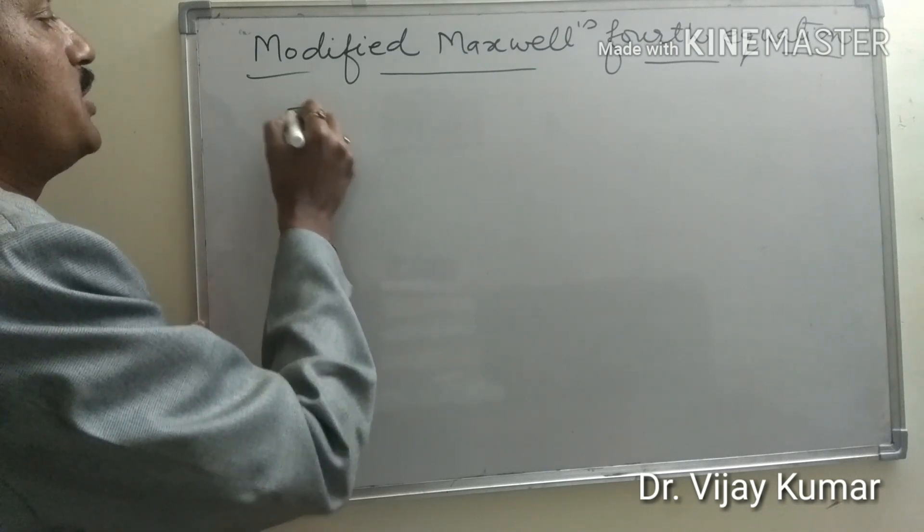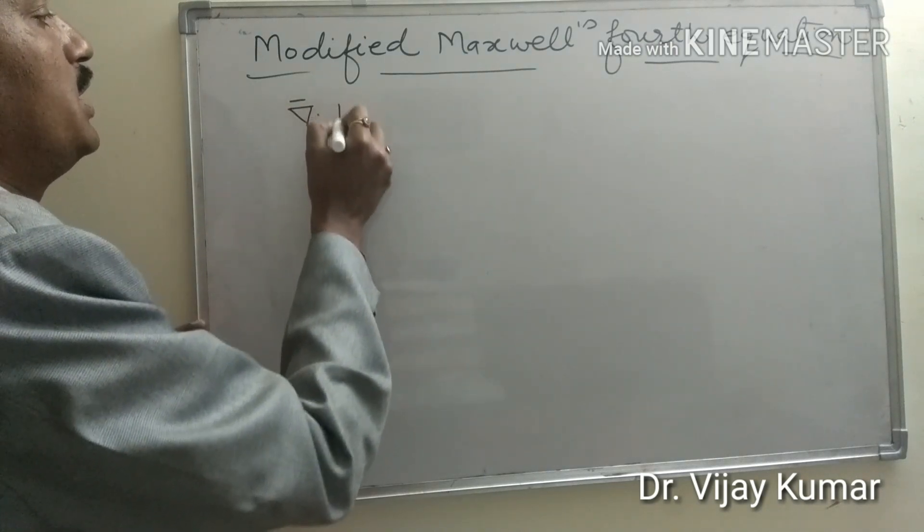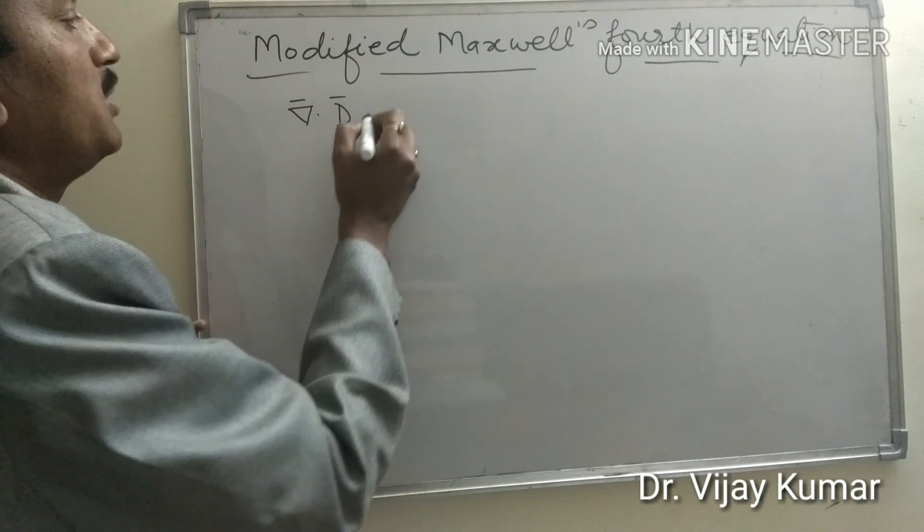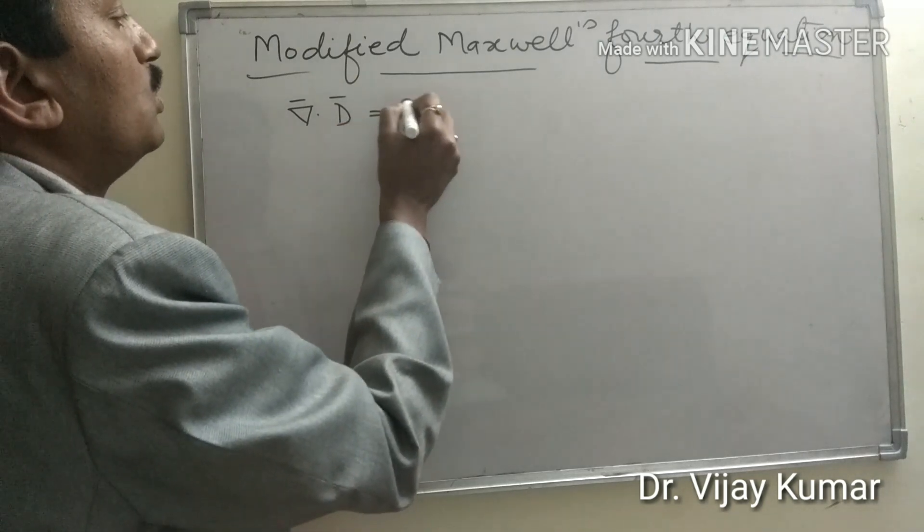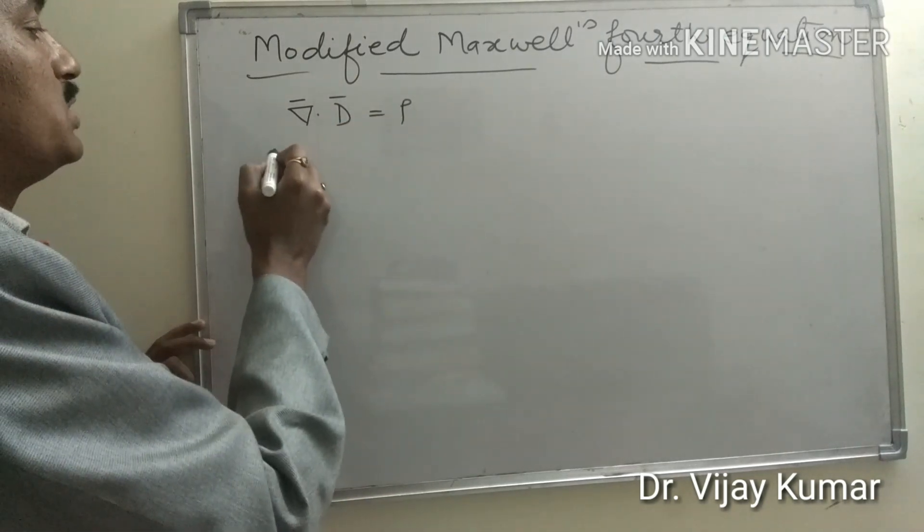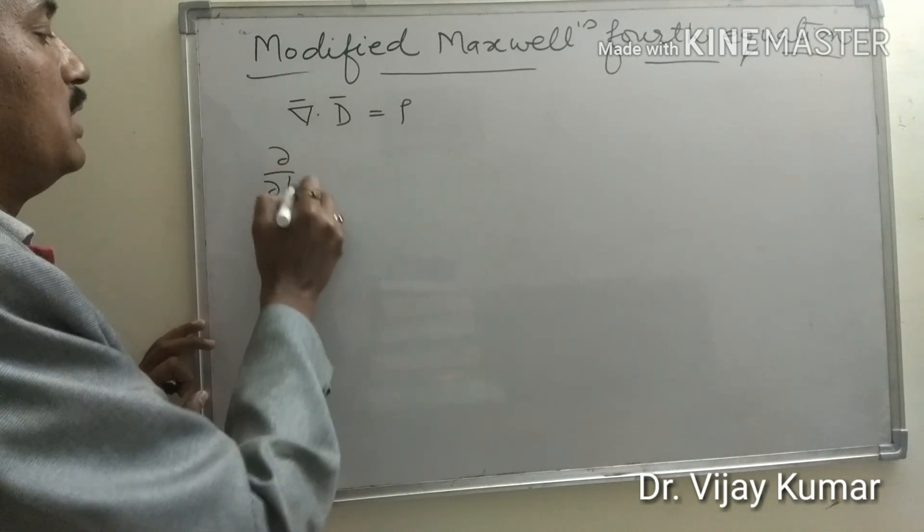Take Maxwell's equation, which is divergence of electric displacement vector equal to rho. Take differentiation on both sides, del upon del t.